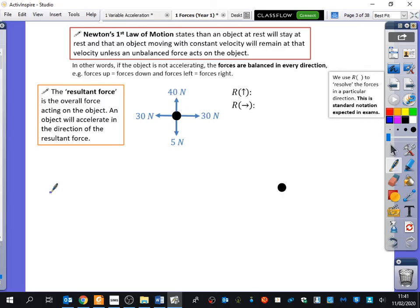The first law of motion says that an object at rest will stay at rest, and that if an object is moving with constant velocity, it will remain at that velocity unless an unbalanced force acts on the object. So in other words, what this is saying is if the object is not accelerating, the forces are balanced in every direction. Forces up equal forces down, and forces left equal forces right. So if something is not accelerating, then the forces must be balanced. Not accelerating can mean two things, though. What are the two things not accelerating could mean?